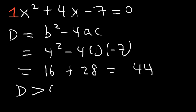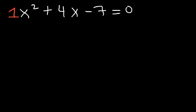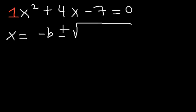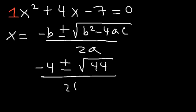Since the discriminant is greater than 0 — since it's a positive number — that means we should get two real solutions. Now let's use the quadratic formula to prove that. x is equal to negative b plus or minus square root of b squared minus 4ac, divided by 2a. So that's negative 4 plus or minus square root of 44, divided by 2 times 1. Now let's simplify this expression.